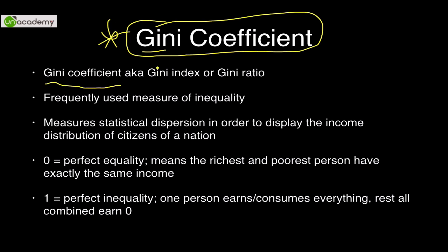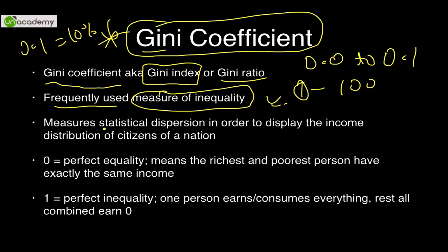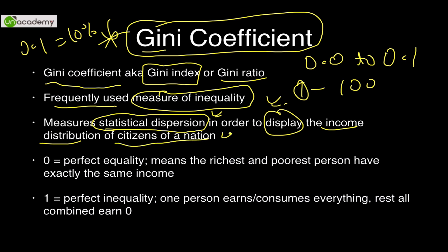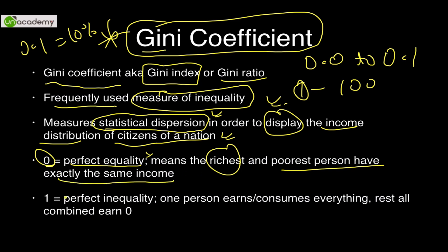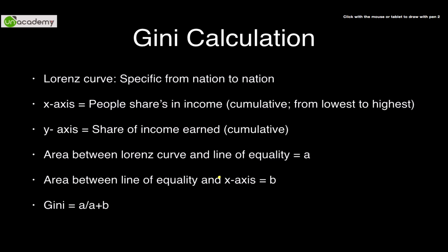The Gini Coefficient is also known as the Gini Index or Gini Ratio. The difference in terminology is mainly in scale: the index ranges from 0.0 to 1.0, while the coefficient can range from 0 to 100 — it is just the percentage difference. It is one of the most frequently used measures of inequality; it measures statistical dispersion to display income distribution of citizens of a nation. Zero means perfect equality — the richest and poorest person have exactly the same income. One (or 100) means perfect inequality — one person earns everything and the rest earn zero.